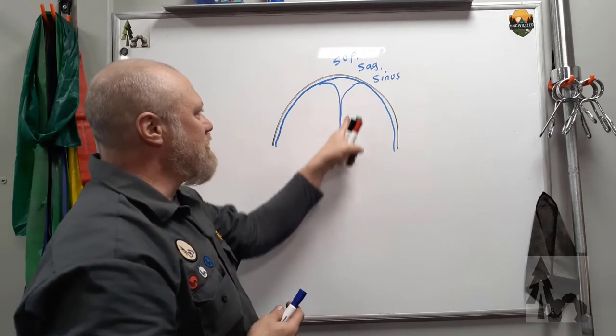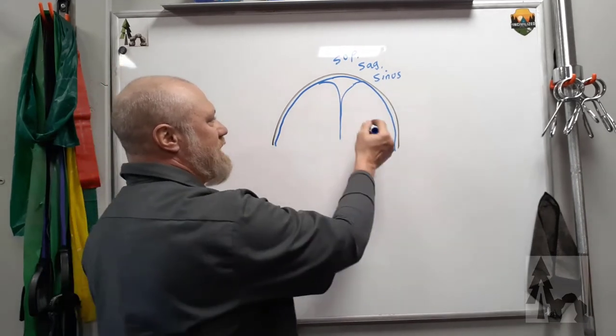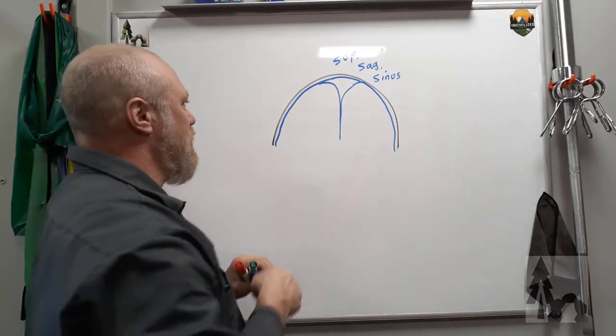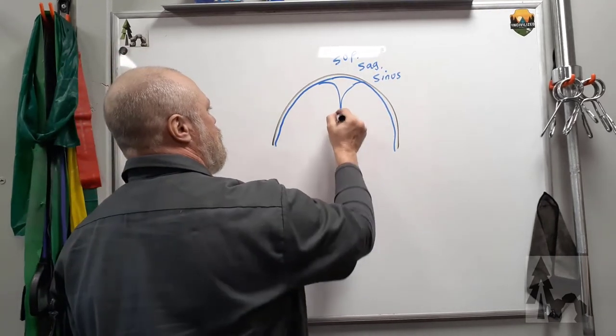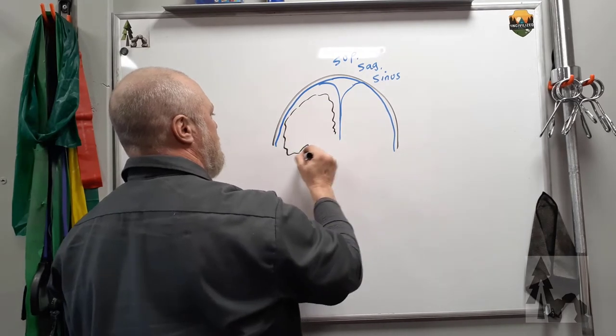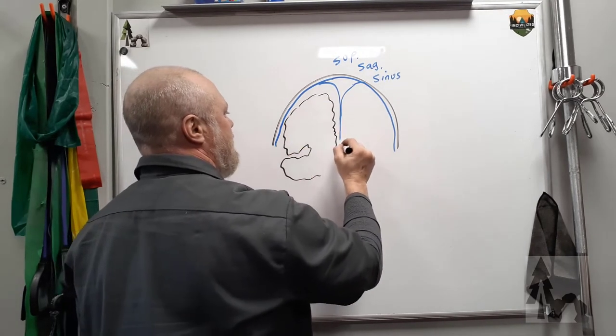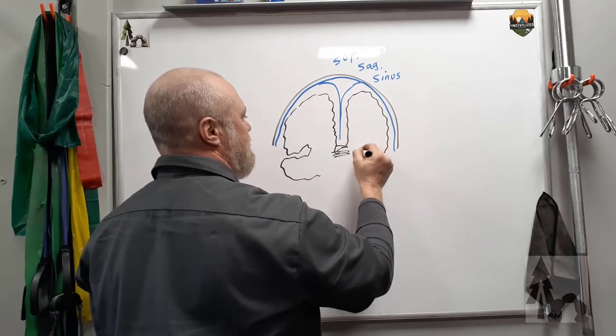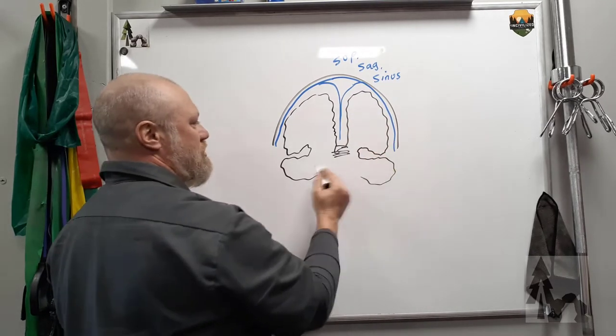This portion of the dura that folds down between the right and left hemispheres of the brain. I'm going to draw your brain in there. There's a brain. There's a brain. The corpus callosum here joined in the right and left hemispheres. Those are your temporal lobes.